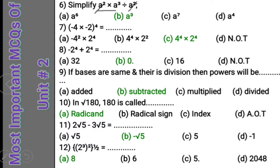Question 7: Minus 4 into minus 2, whole power 4, is equal to what? First multiply the signs — minus into minus gives plus. For a whole power applied to multiplication, the power is distributed to both numbers inside the bracket. So the answer would be 4 power 4 into 2 power 4, which is option C.